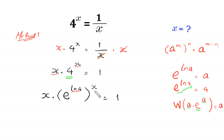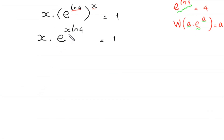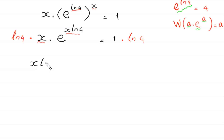This expression becomes x times e to the power ln of 4 times x, so x times ln of 4 is equal to 1. To make the x match x times ln of 4, we multiply both sides by ln of 4. So ln of 4 times x times e to the power x times ln of 4 is equal to ln of 4.